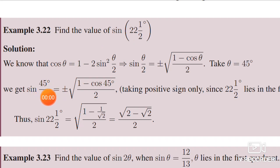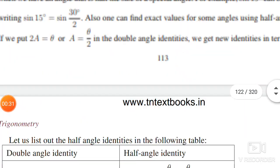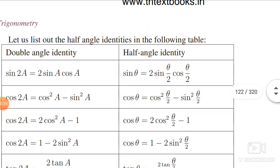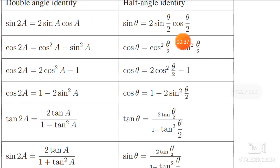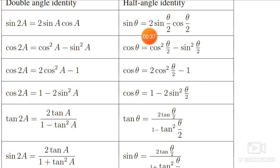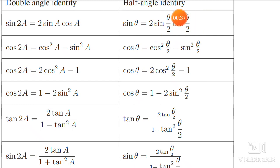Since it is of the form sin theta by 2, we use the half-angle identity formula. Here you see sin theta by 2 on one side — this is the trigonometric ratio involving cos theta and sin theta. Again cos theta by 2, again cos 45 by 2. One side is theta by 2, sin theta by 2; the other side is also theta by 2. This is the formula.